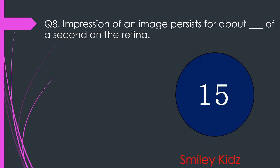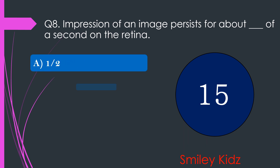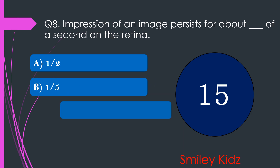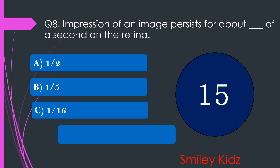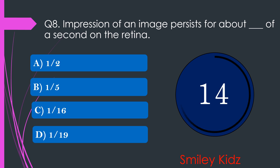Question number 8. Impression of an image persists for about dash of a second on the retina. The options are A. 1 by 2, B. 1 by 5, C. 1 by 16, or D. 1 by 19. Your time starts now.